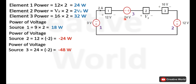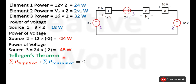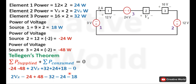Now we have all supplied and consumed powers in the circuit. We can use intelligence theorem to calculate the value of Vx. According to intelligence theorem, if we add all supplied and consumed powers in a network their result will be zero. Placing all powers and rearranging the equation to separate the variable from constants, we calculate the value of Vx, which is minus 1 volt.